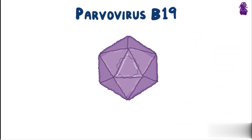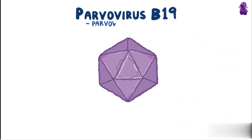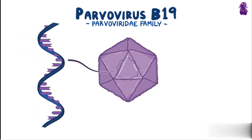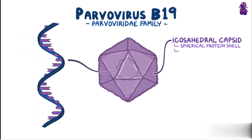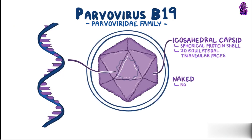Parvovirus B19 is part of the Parvoviridae family. It's a single-stranded DNA virus surrounded by an icosahedral capsid, which is a spherical protein shell made up of 20 equilateral triangular faces. And it's naked because the capsid is not covered by a lipid membrane.